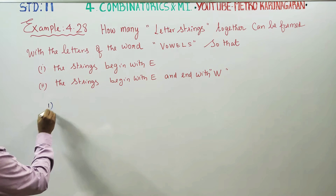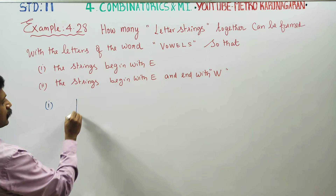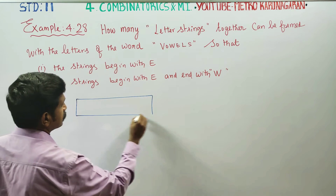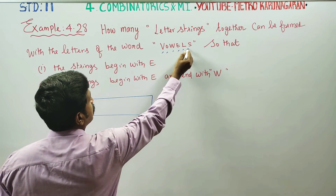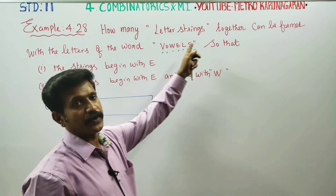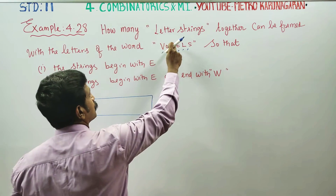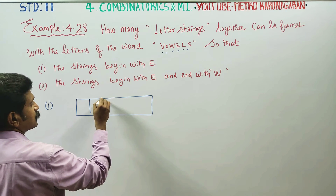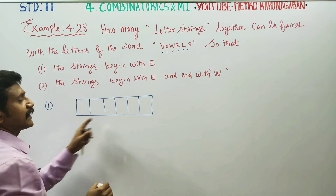First condition: the letters used are V, O, W, E, L, S. You can form strings using these letters, and there are 6 vacancies: positions 1, 2, 3, 4, 5, 6.